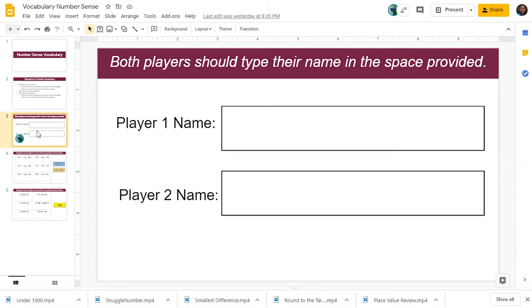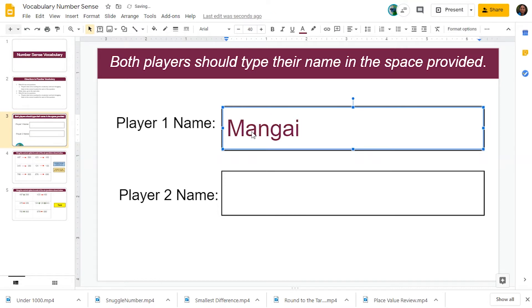Slide number three, for the purpose of demonstration, I am going to choose player number one and type in my name. My partner is going to do the same thing for player number two.